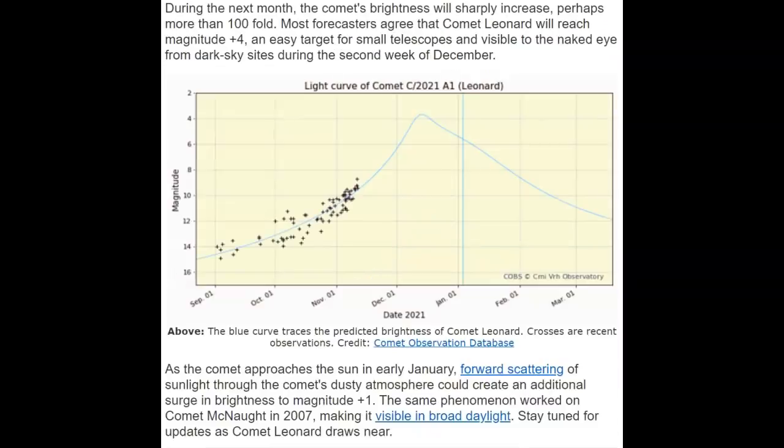During the next month, the comet's brightness will sharply increase, perhaps more than a hundred-fold. Most forecasters agree that Comet Leonard will reach magnitude plus four, an easy target for small telescopes and visible to the naked eye from dark sky sites during the second week of December. In this chart, the blue line is the predicted brightness.